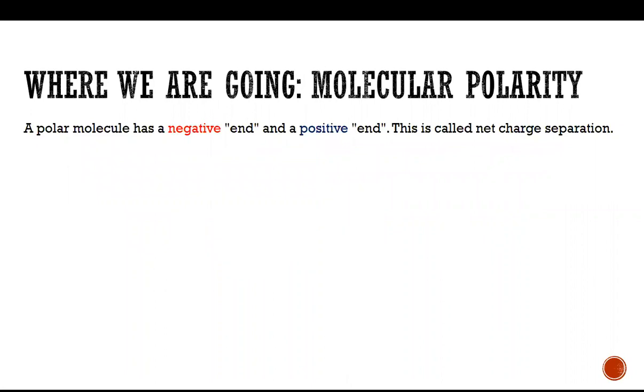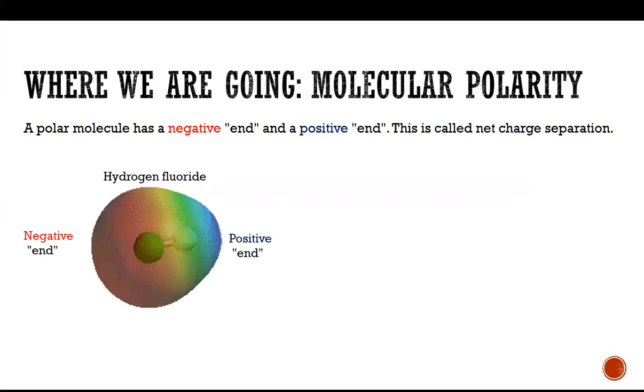So let's define polarity first. A polar molecule is one that has a negative end and a positive end. We also call this a net charge separation. So to see a little bit what I mean here, let me give you an example, hydrogen fluoride. There's the negative end and the positive end. And these ends of the molecules correspond to the different elements. They're based on the difference in electronegativity. Because fluorine is much more electronegative than hydrogen, it pulls the electrons towards it, creating a negative end.